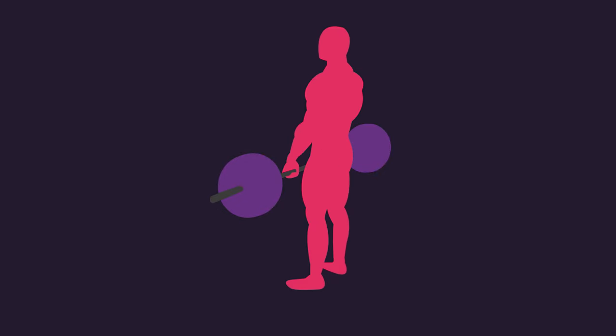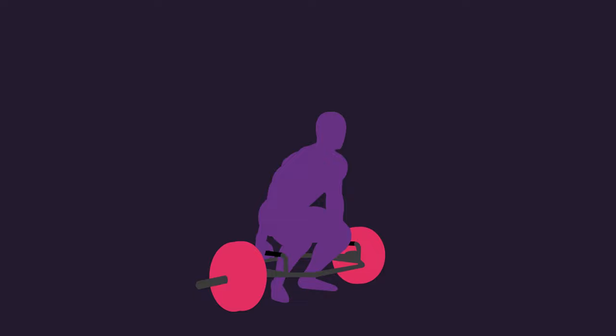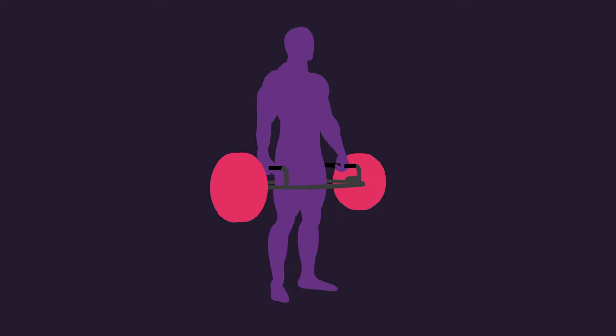A straight bar is used in the conventional deadlift and the load is placed in front of your body as you execute the movement. A hexagonally shaped bar is used with the trap bar deadlift. You step inside of this and with the handles either side of you, you lift the load.